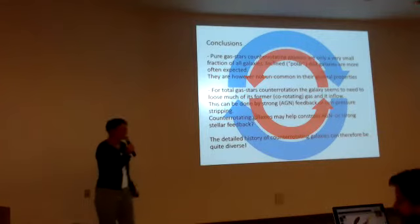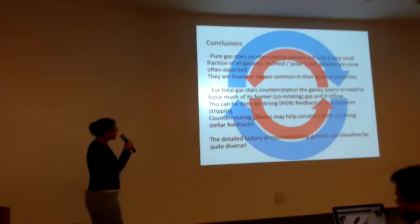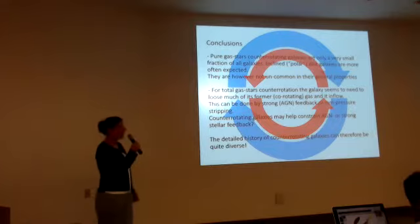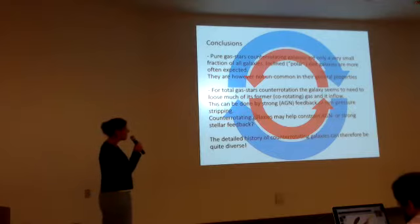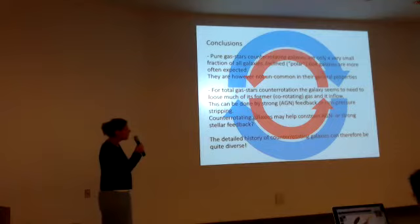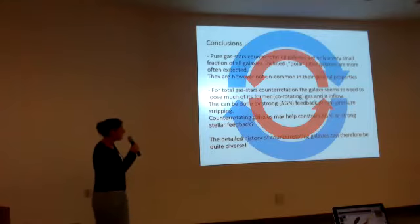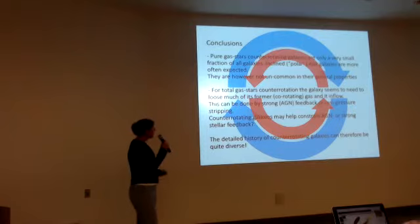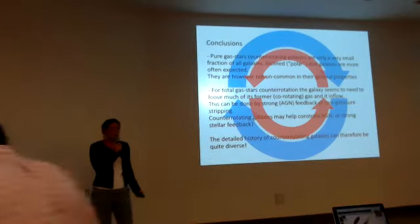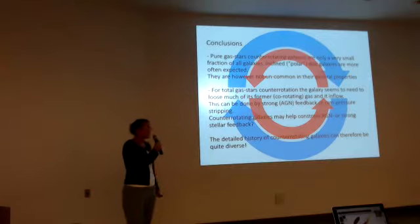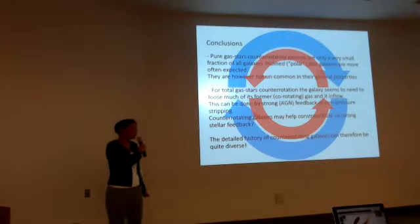What do we learn from this? We can say that pure gas-star counter-rotating galaxies are only a very small fraction of all galaxies, but they exist and they can lead to bigger stellar-stellar counter-rotation. However, even of those, a significant fraction has gas disks inclined with respect to their stellar disks, so it could be considered polar disk galaxies. If you only look at the polar disk galaxies, that's a much larger fraction. However, they don't seem to possess specific properties compared to all galaxies at this mass. For the total gas-star counter-rotation, the galaxy seems to need to lose a lot of its former gas and then re-accrete material that rotates in the opposite sense.